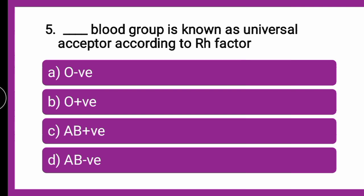The next question is: which blood group is also known as the universal acceptor according to the Rh factor? Whether it is O negative, O positive, AB positive, or AB negative? Just now we had a talk about the universal donor; now it is about the universal acceptor — who is the best recipient? Put your answers in the comment box and we will go for the explanation.